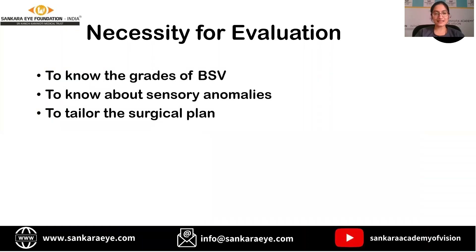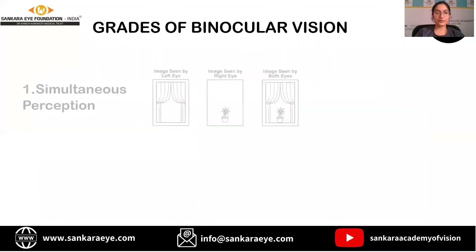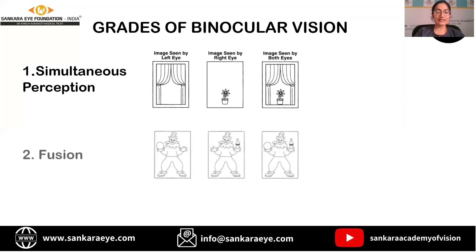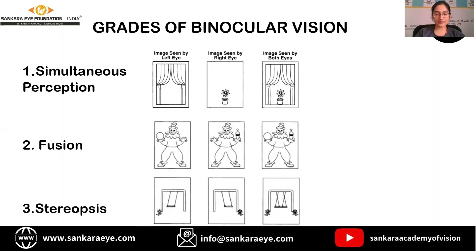What is the necessity for this evaluation? It is important to know the grade of binocular single vision, to know about sensory anomalies, and to tailor the surgical plan. There are three grades of binocular vision. The first grade is simultaneous perception, or simultaneous macular perception, which is the most elementary type of binocularity. The second grade is fusion and the third grade is stereopsis.